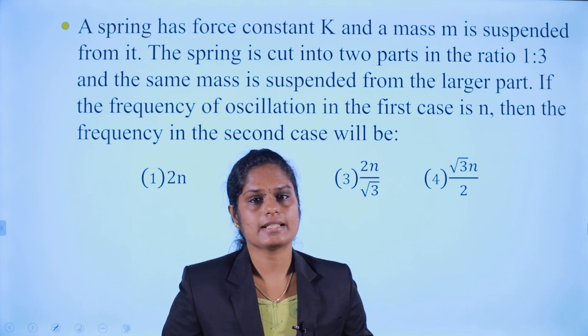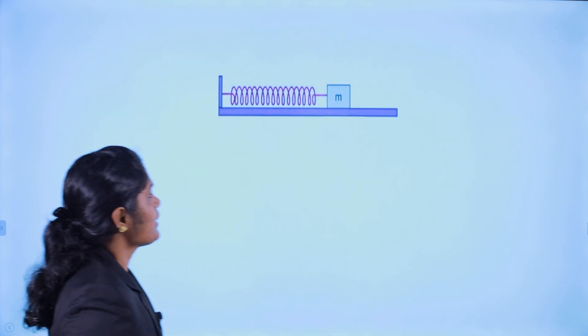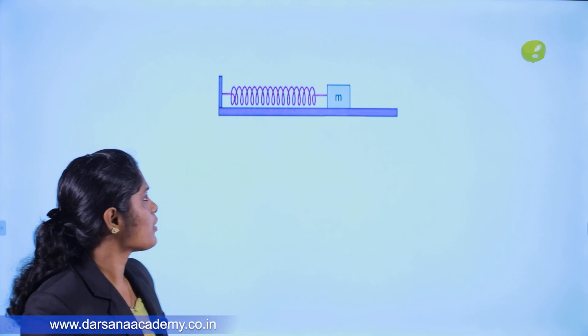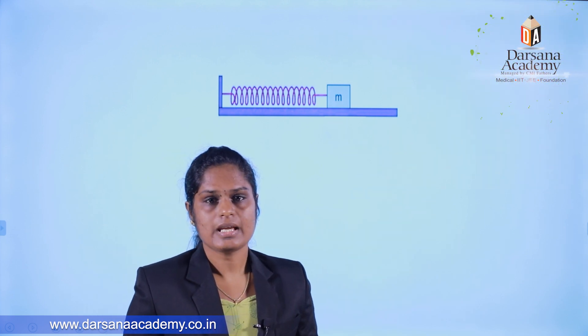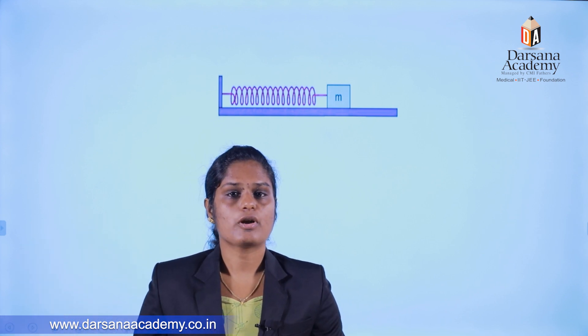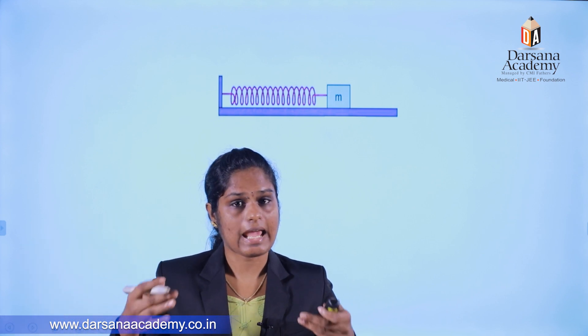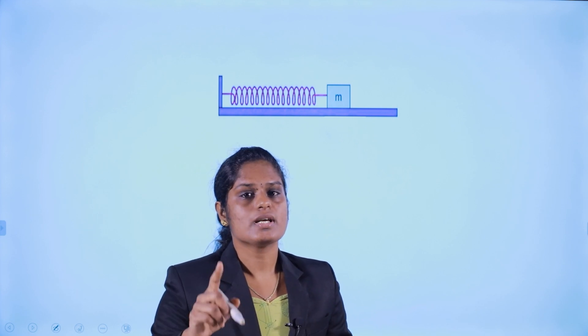If you cut the spring, it will change the spring constant. We have a spring with spring constant k. Now, if the length of the spring is increased by n times, then the spring constant becomes k by n. In this case, if the length is reduced by n, the spring constant becomes nk. Simple point: spring constant is inversely proportional to spring length.